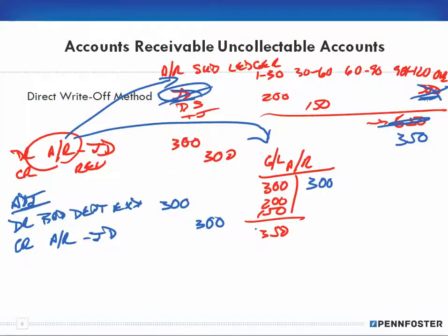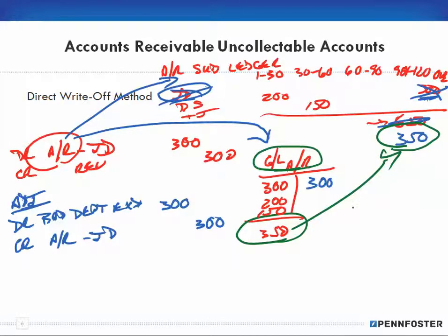At the end of the accounting period, as part of the closing process, you have to look at your accounts receivable to make sure it accurately reflects what people owe you. If somebody is not going to pay, you have to get it off your books. You also have to make sure the balance in your general ledger account matches the balance in your subsidiary ledger. If they're not the same, you made a mistake — most likely you didn't post an entry in both places. Reconciling them is all part of the closing process.